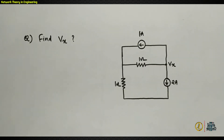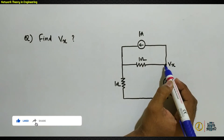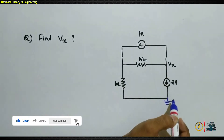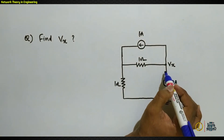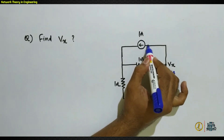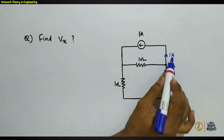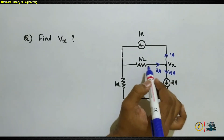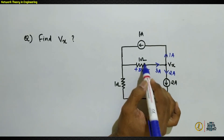In the next question, we need to find VX, the voltage at a node with respect to a reference ground. First, mark known currents: 2 amperes flows through one branch and 1 ampere through another. At one node, 2 amperes and 1 ampere are leaving, so 3 amperes must be entering, flowing through the 1-ohm resistor, producing a 3-volt drop.